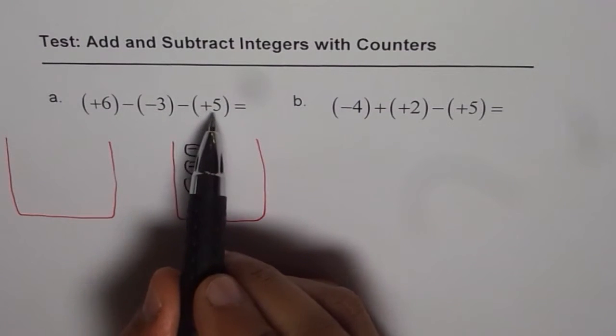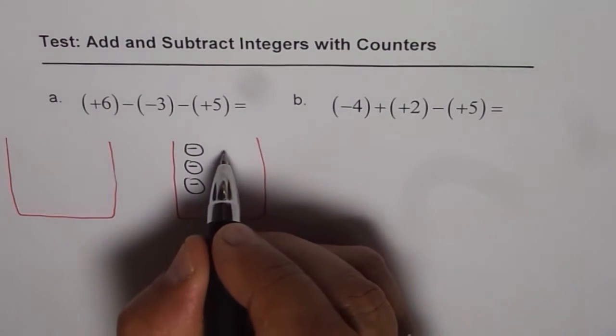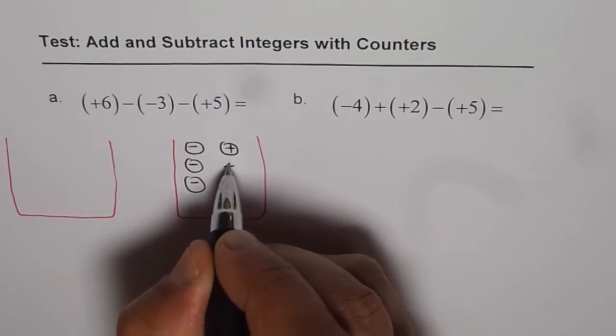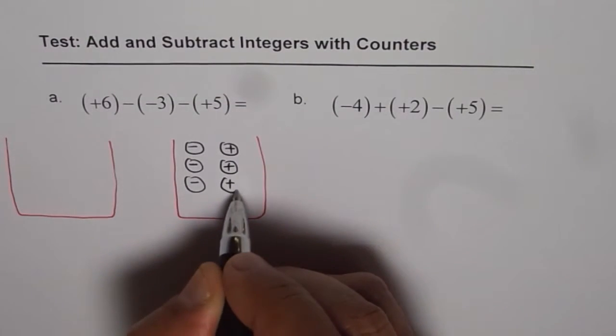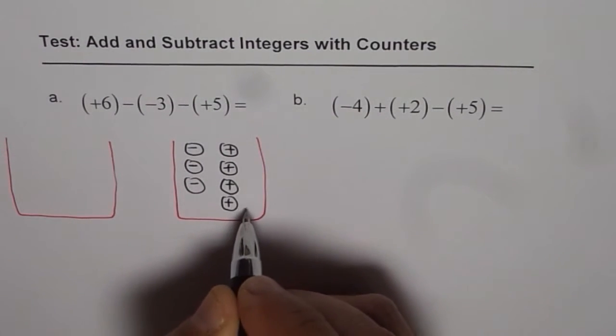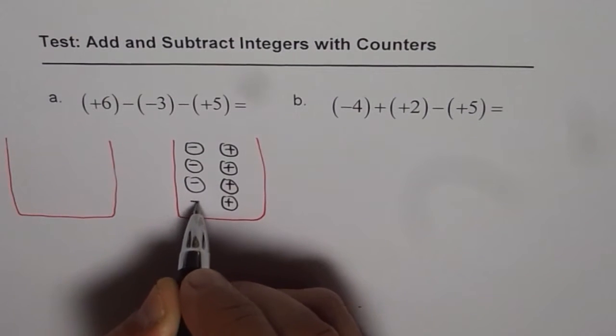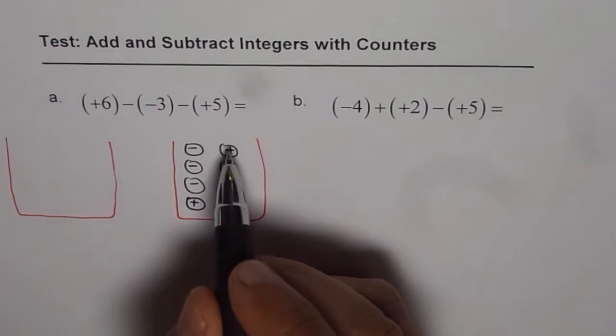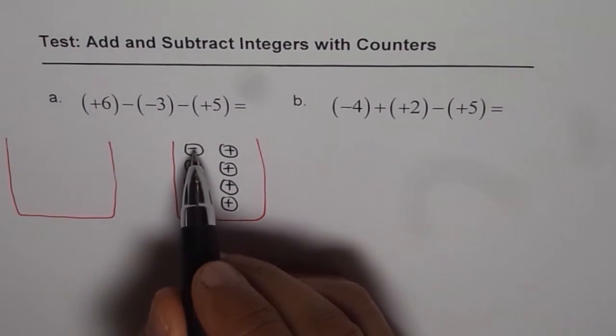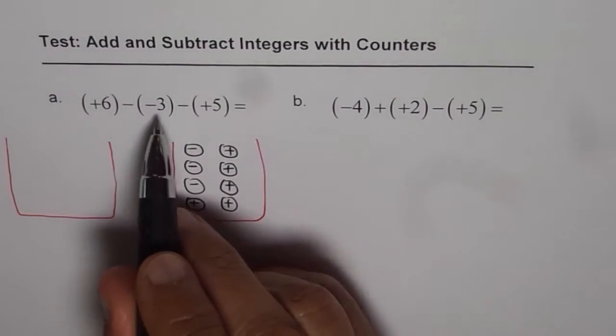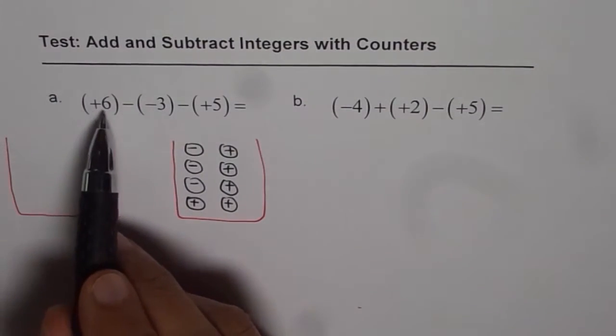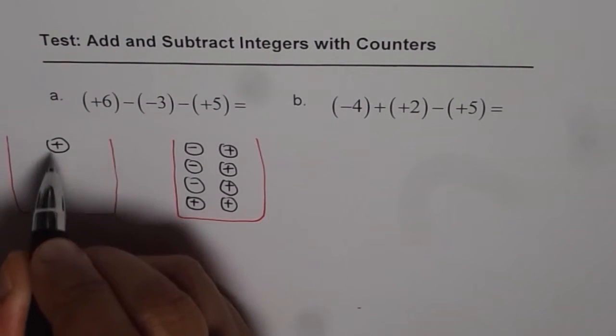And we also have in this bucket (+5). So (+5) is like this. And let me write (+5). So there is (+5) and (-3) which we have to take away from (+6). So here we have (+6) for us.